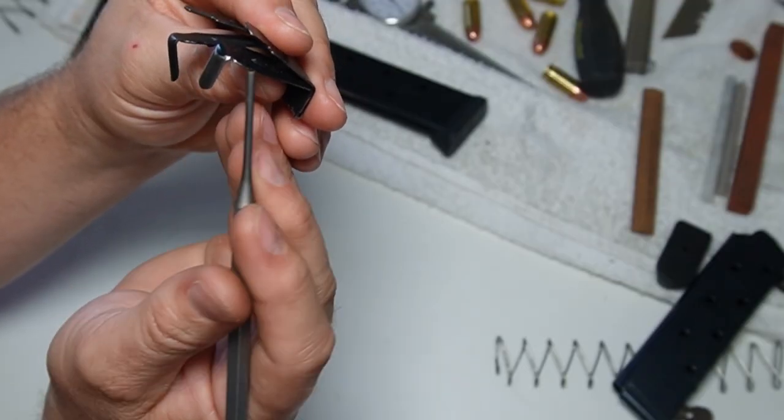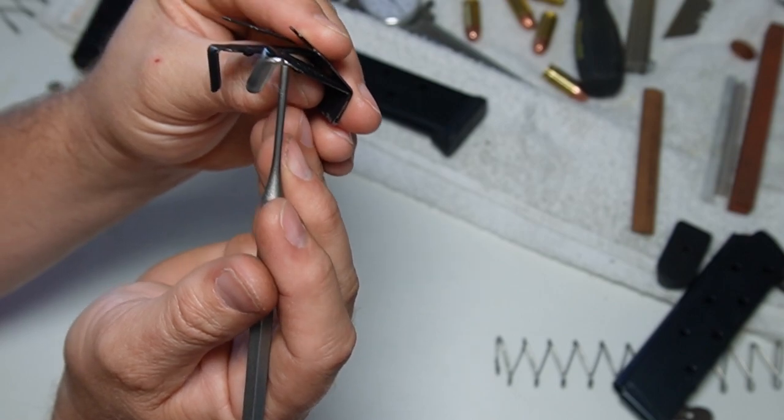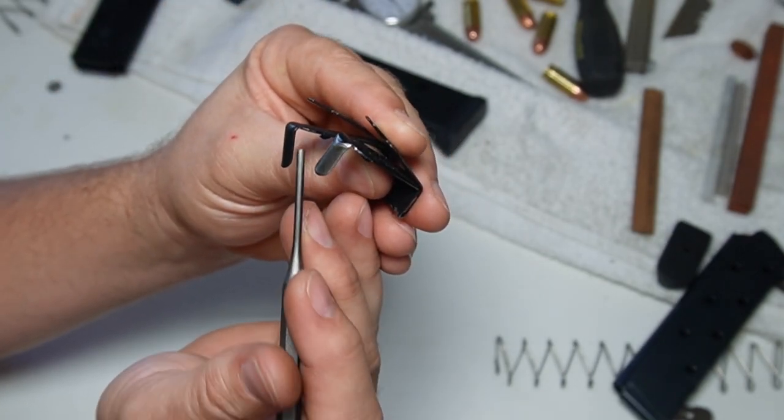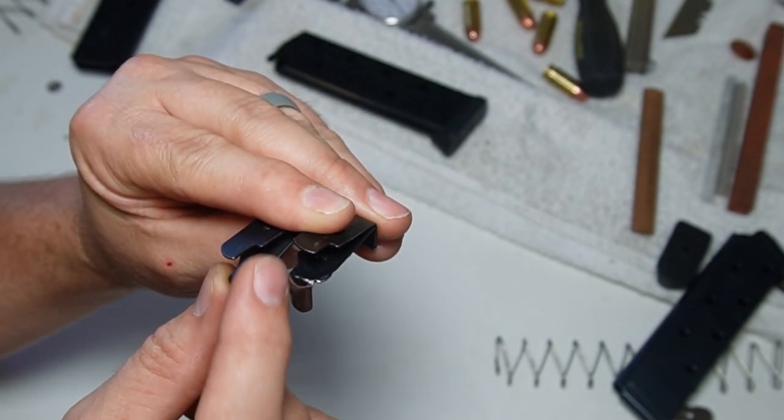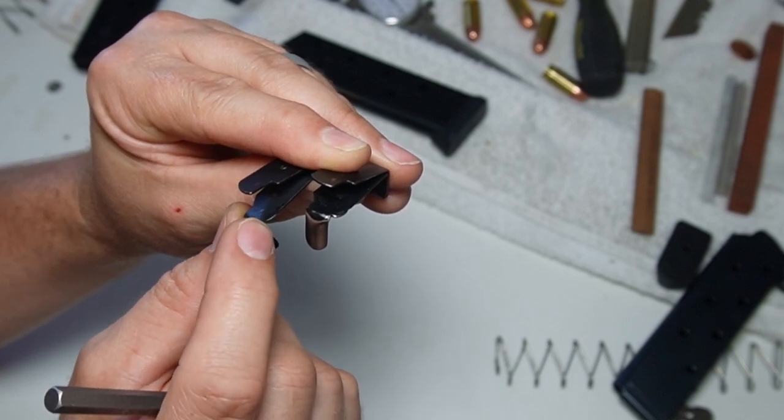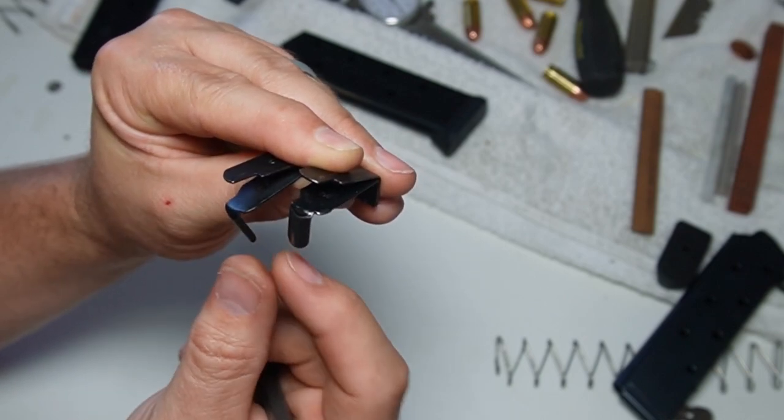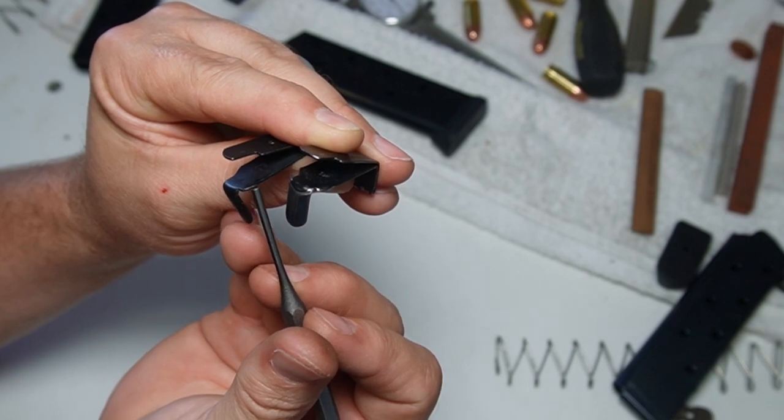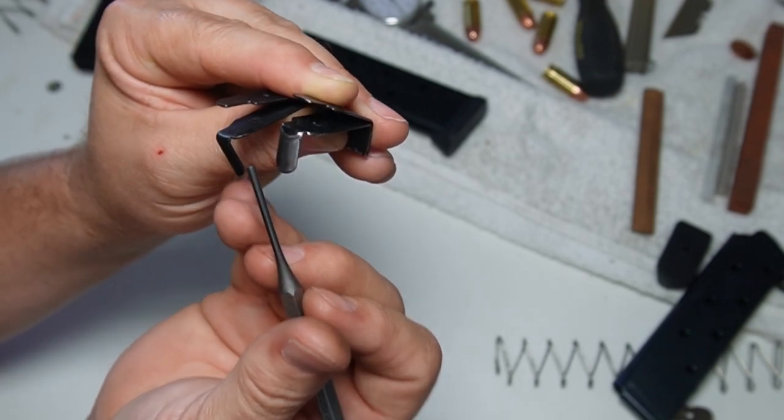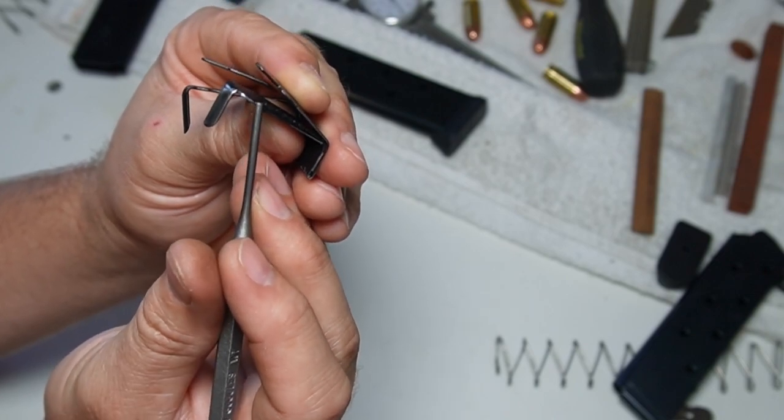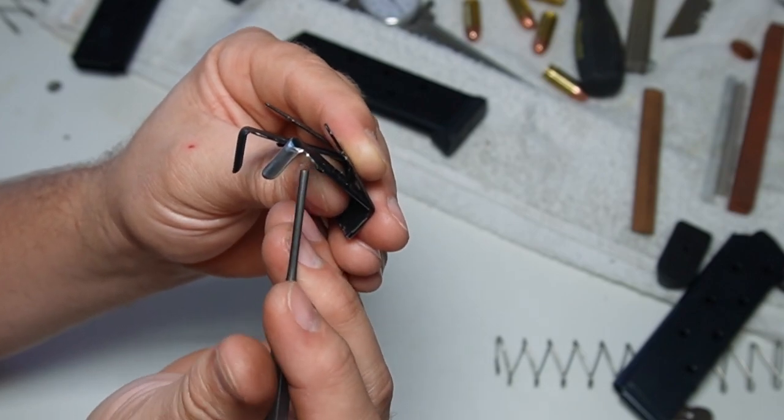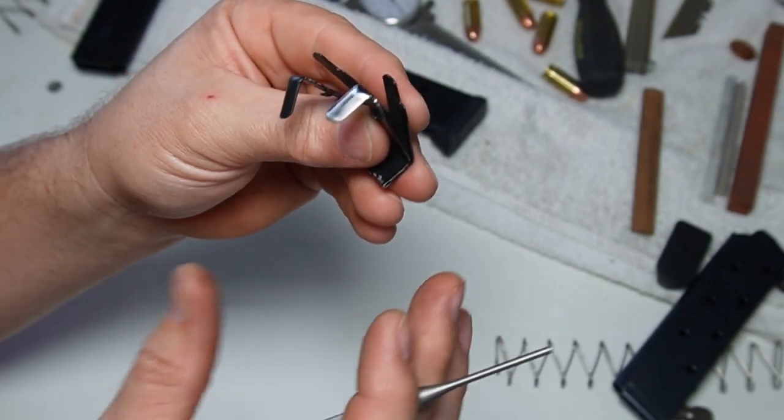This edge right here, which as you can see is highlighted right here in the shiny area, wasn't bad. It's fairly smooth, but I just made sure that it didn't have any sharp edges on here because this rubs right up against the wall of the magazine tube. So I doubly made sure that it was nice and smooth and just very lightly hit it with a stone just to take off any potential burrs.